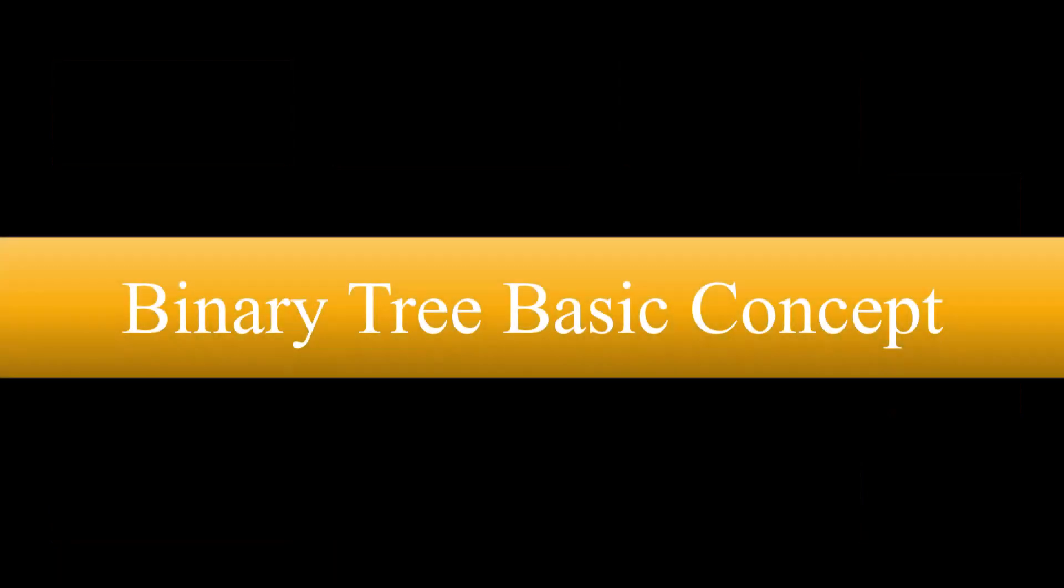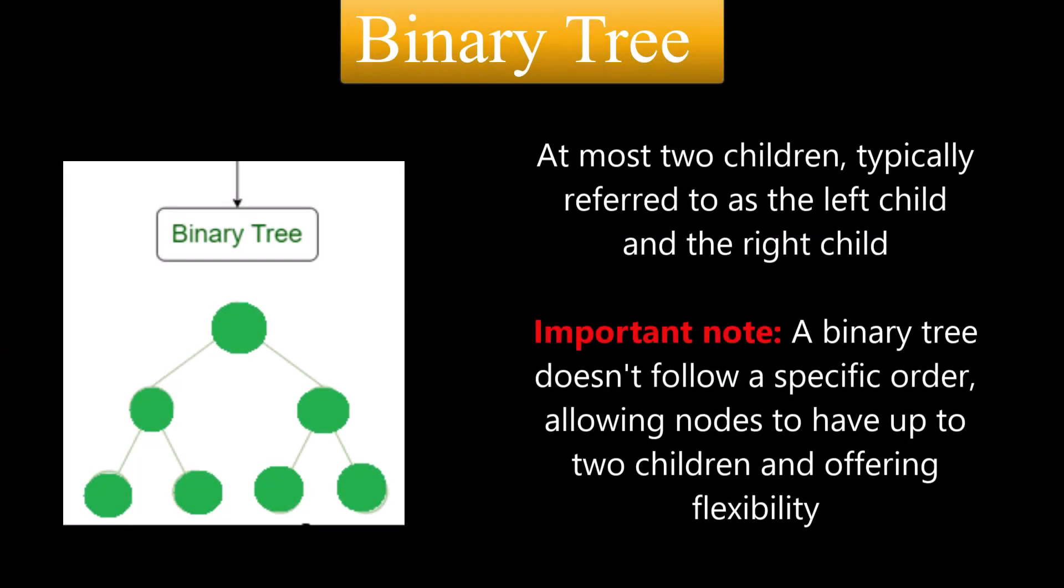Let's start by talking about one of the most talked about trees, which is binary tree. Binary tree is a tree in which each node has at most two children, typically referred to as the left child and the right child.